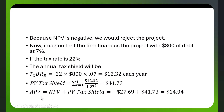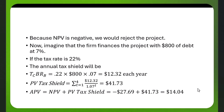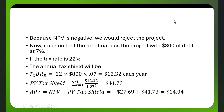So now our adjusted present value is the NPV of the project, minus $27.69, plus the present value of the tax yield, which is $41.73. The project did not look good originally on an unlevered basis, but when we account for the tax yield, we see that it's actually a good project. APV is a different approach to capital budgeting, and it's a good one in that it accounts for the financing effect as well, which isn't accounted for in traditional NPV calculations.